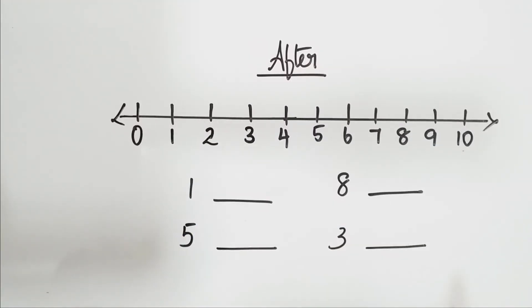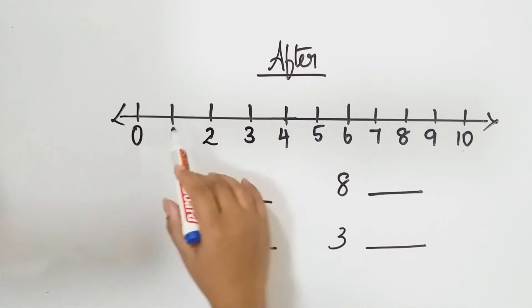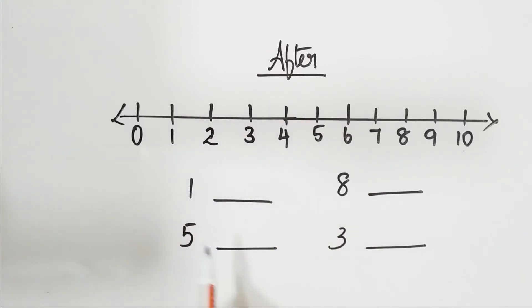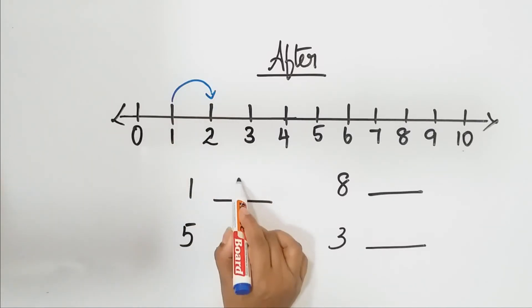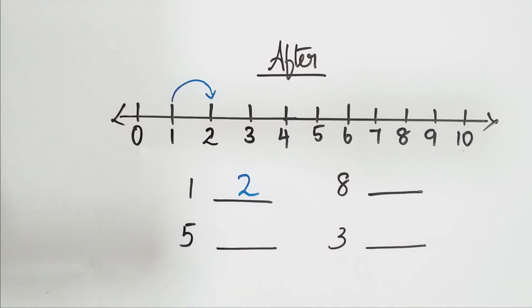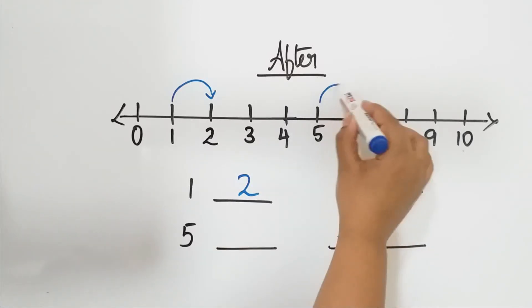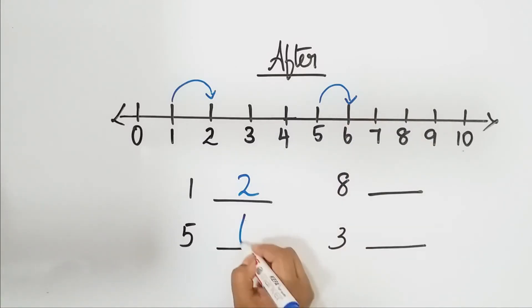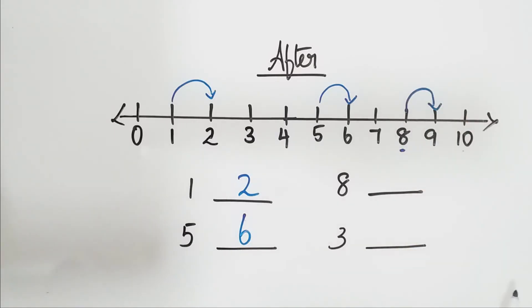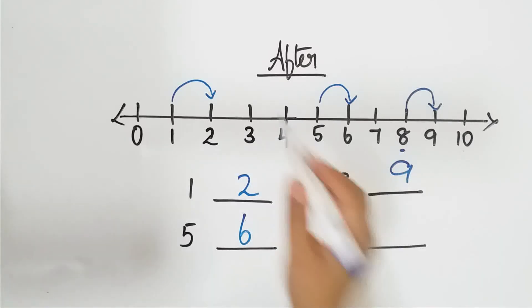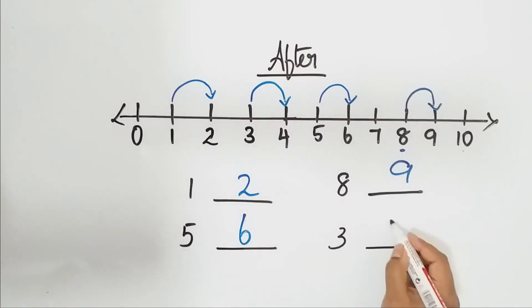So children, now we are going to do the after number. After number means it is the next number. Which is the after number of one? It is two. Very good. Now tell me which is the after number of five? It is six. Which is the after number of eight? It is nine. Now tell me which is the after number of three? It is four. Very good children.